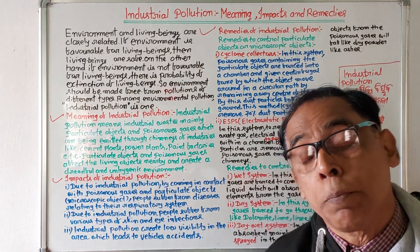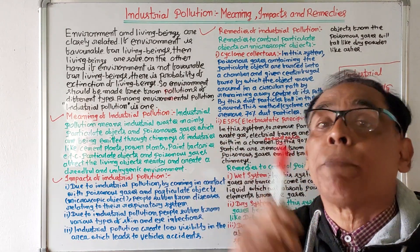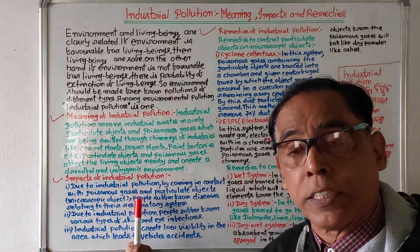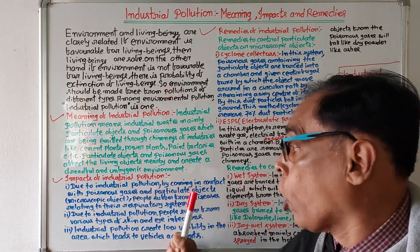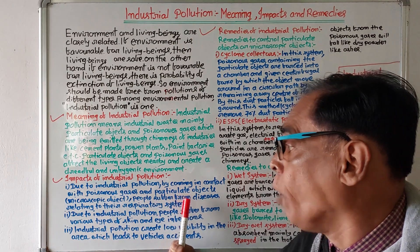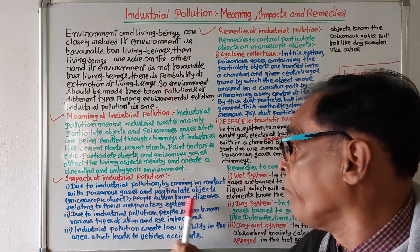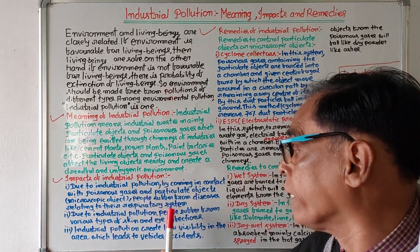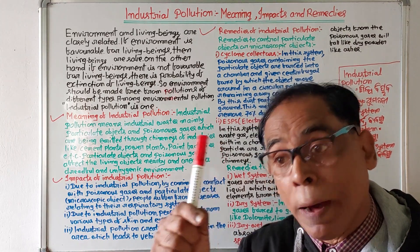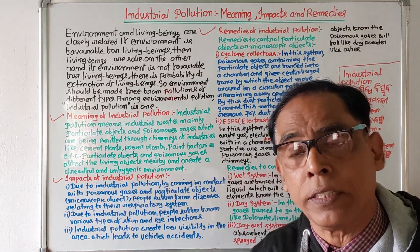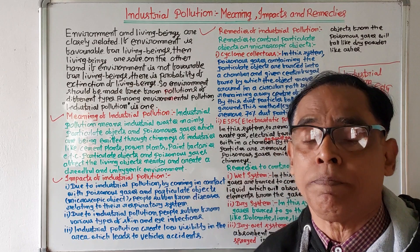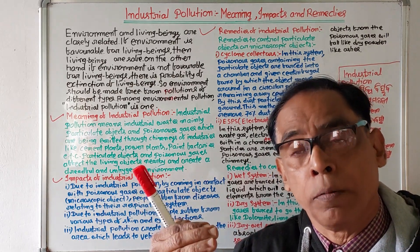Now, the impacts of industrial pollution. Number one: by coming in contact with poisonous gases and particulate or dust particles, people suffer from diseases relating to their respiratory system — mainly bronchial diseases.